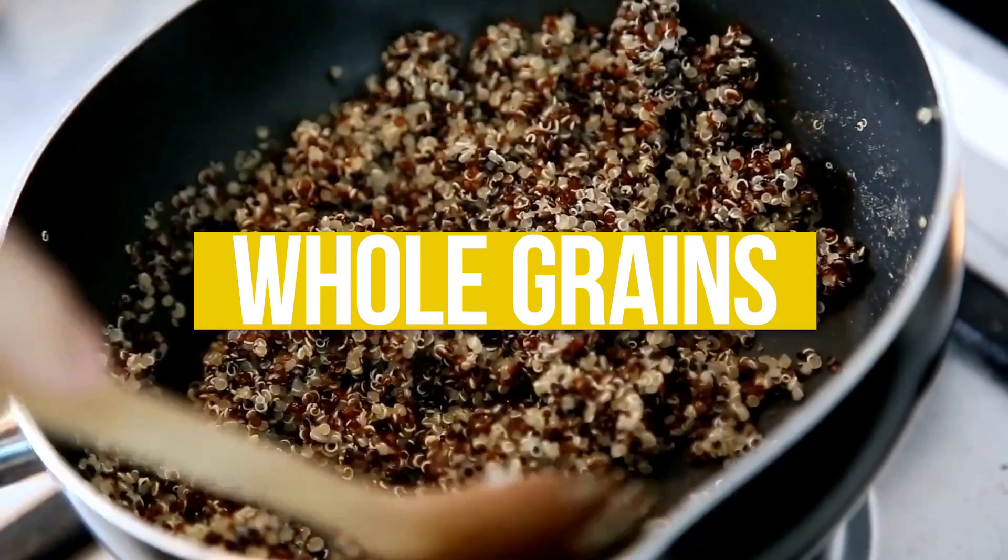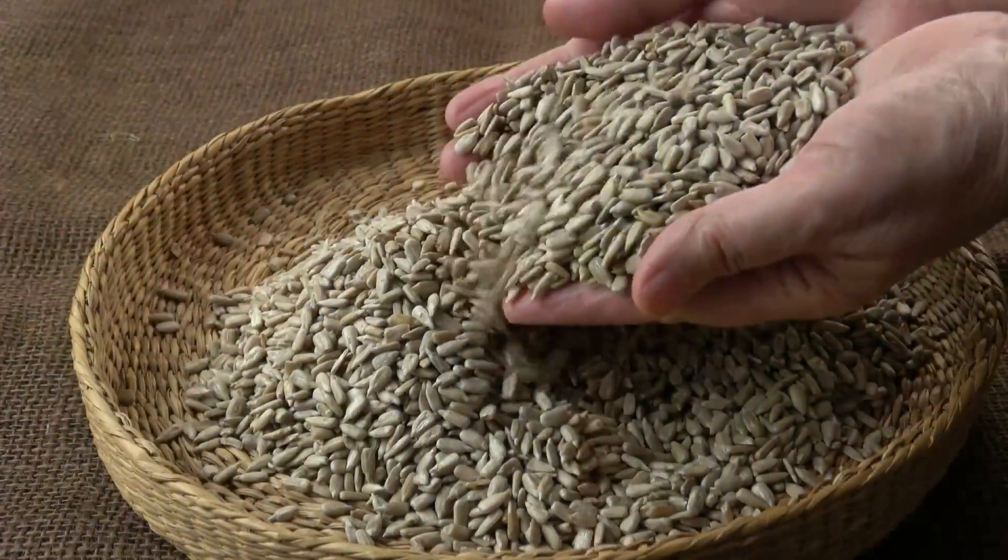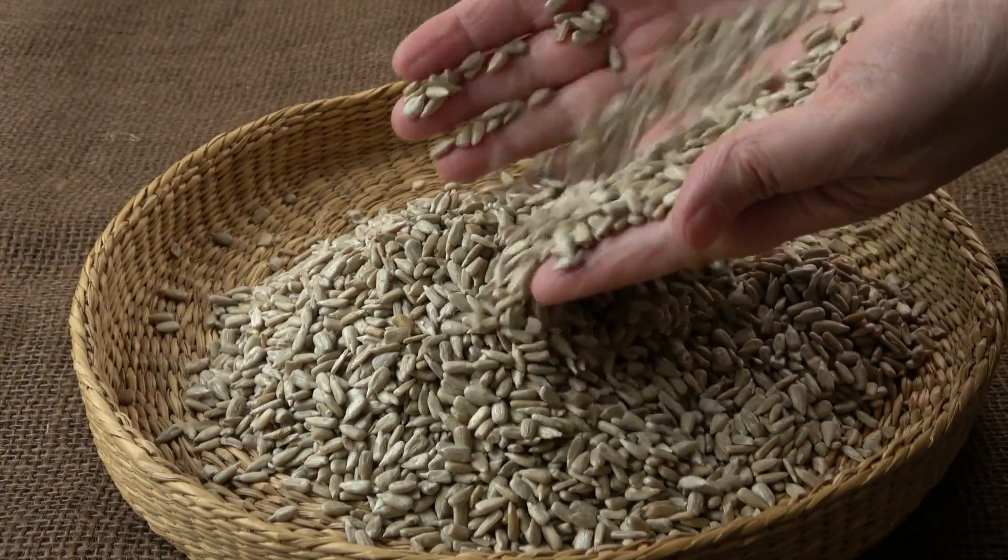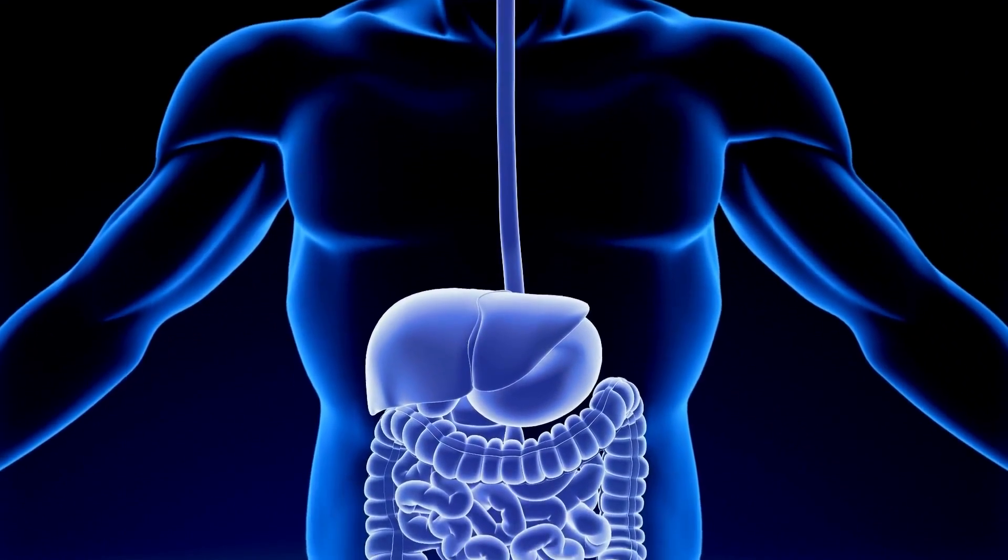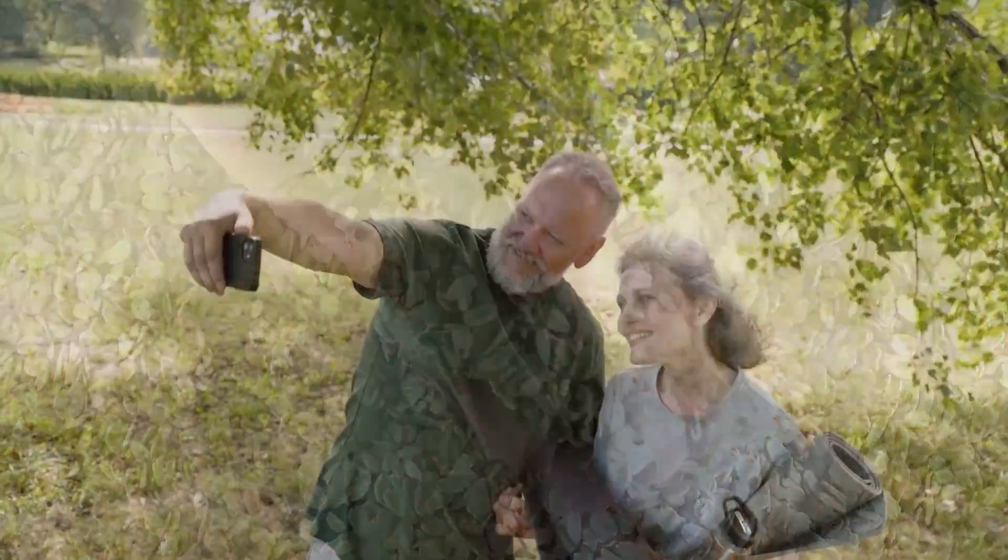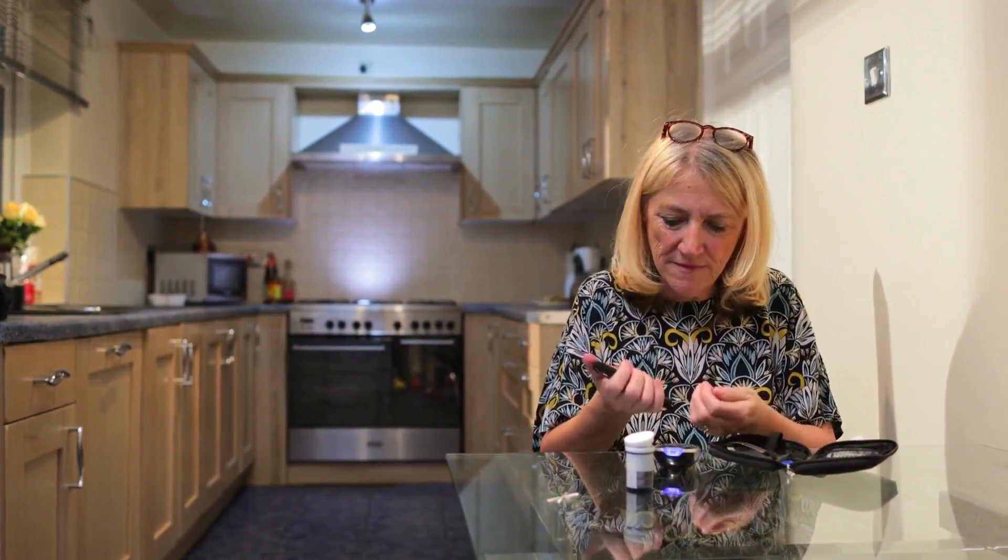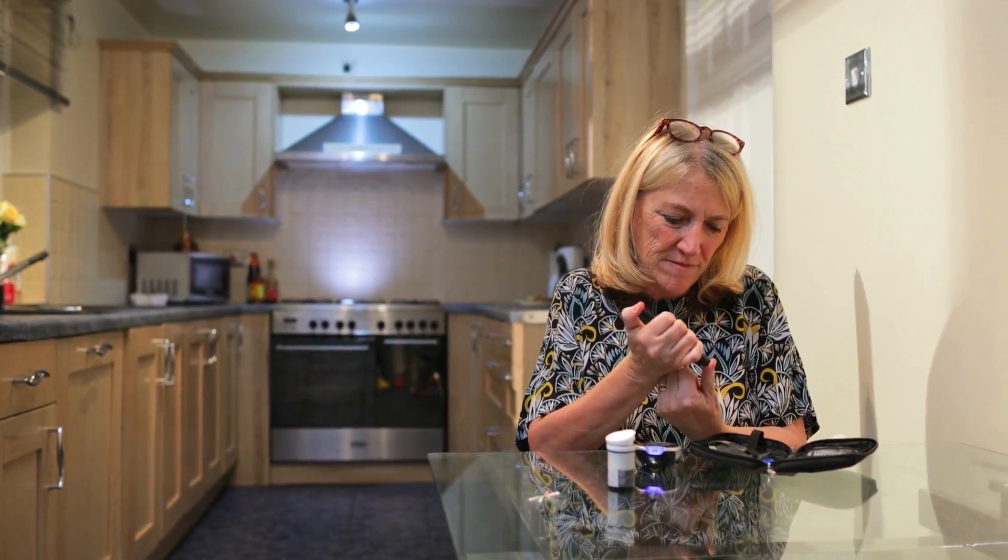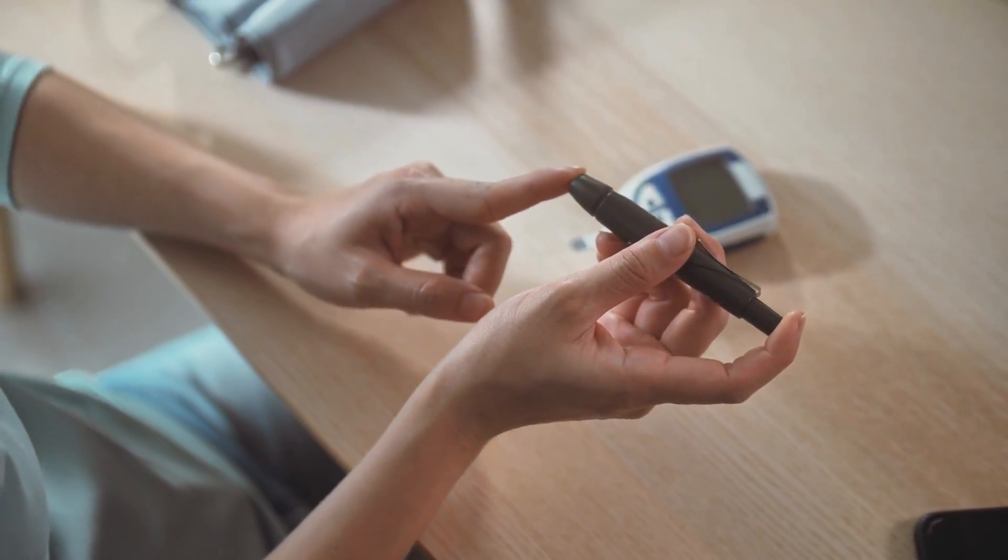Whole grains such as quinoa, brown rice, and oats will give you your energy back. Whole grains are rich in dietary fiber, which plays a crucial role in promoting regular bowel movements and preventing constipation. The complex carbohydrates in whole grains provide a steady and sustained release of energy, helping to maintain stable blood sugar levels. This can prevent sudden spikes and crashes in blood sugar, which is essential for managing diabetes and promoting overall energy and well-being.